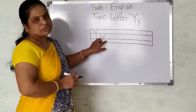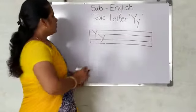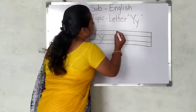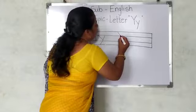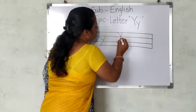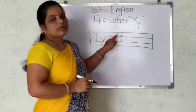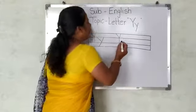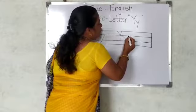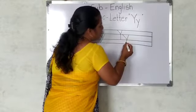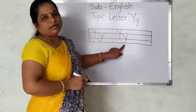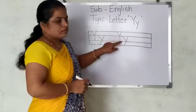Capital Y and small y — see. Capital Y is too easy. You have to just write V here and join the standing line. This is capital Y. And small y: make slanting line down, then join slanting line going down to the red line. This is small y.